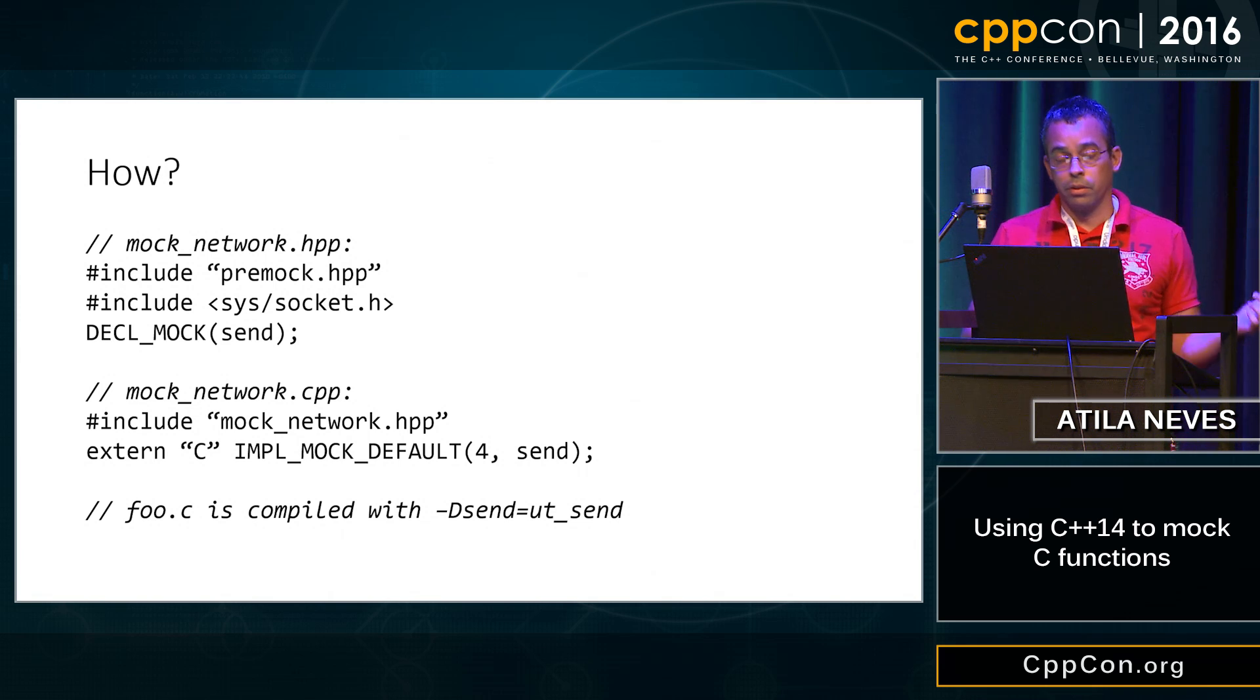And then you have to compile your production code with either -Dsend=ut_send to switch every single instance of send to ut_underscore_send or you can put that in a header file and then -include that so you need some build system support for this but this is literally all you have to do and everything I just showed you just works.